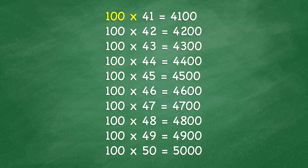100 times 41 equals 4,100. 100 times 42 equals 4,200. 100 times 43 equals 4,300. 100 times 44 equals 4,400. 100 times 45 equals 4,500.